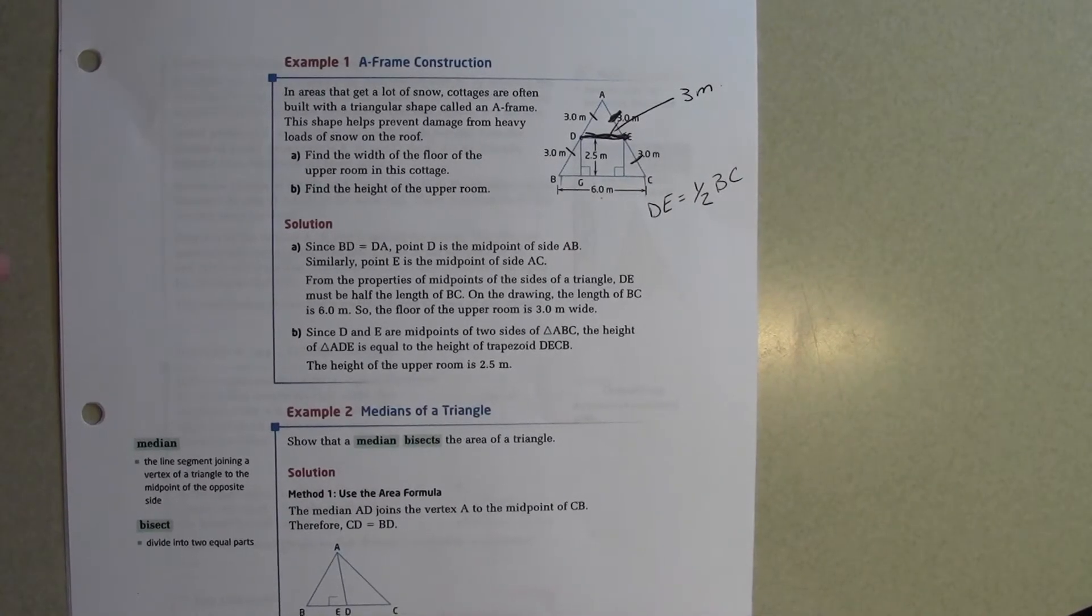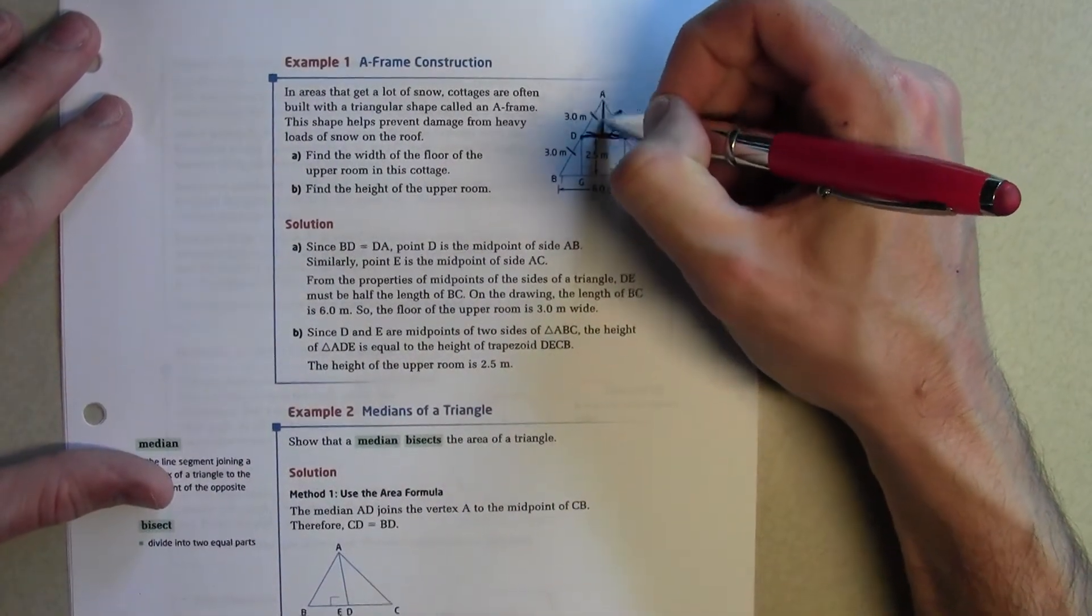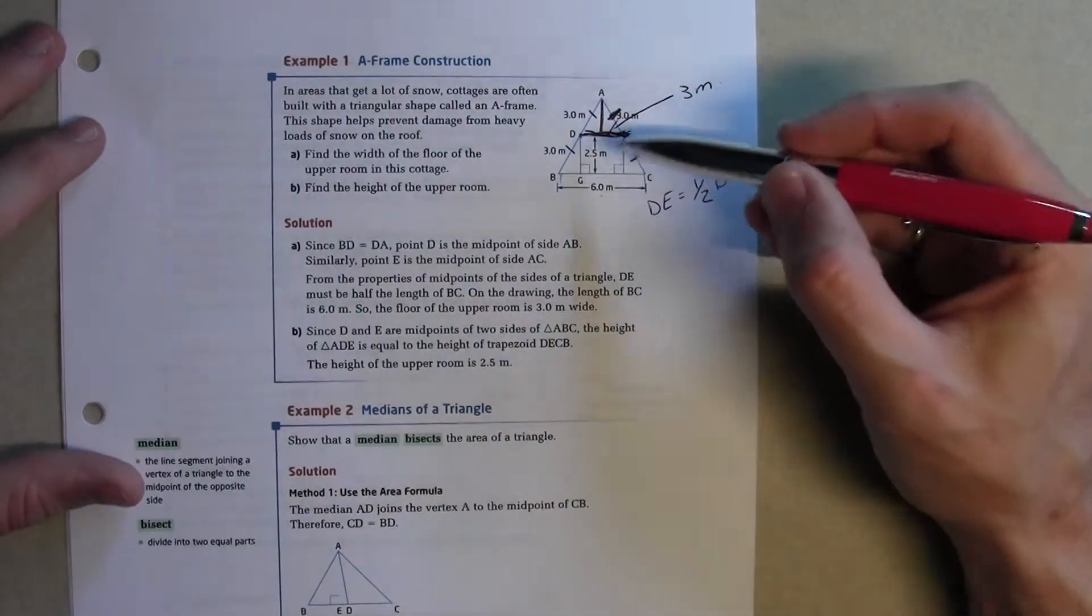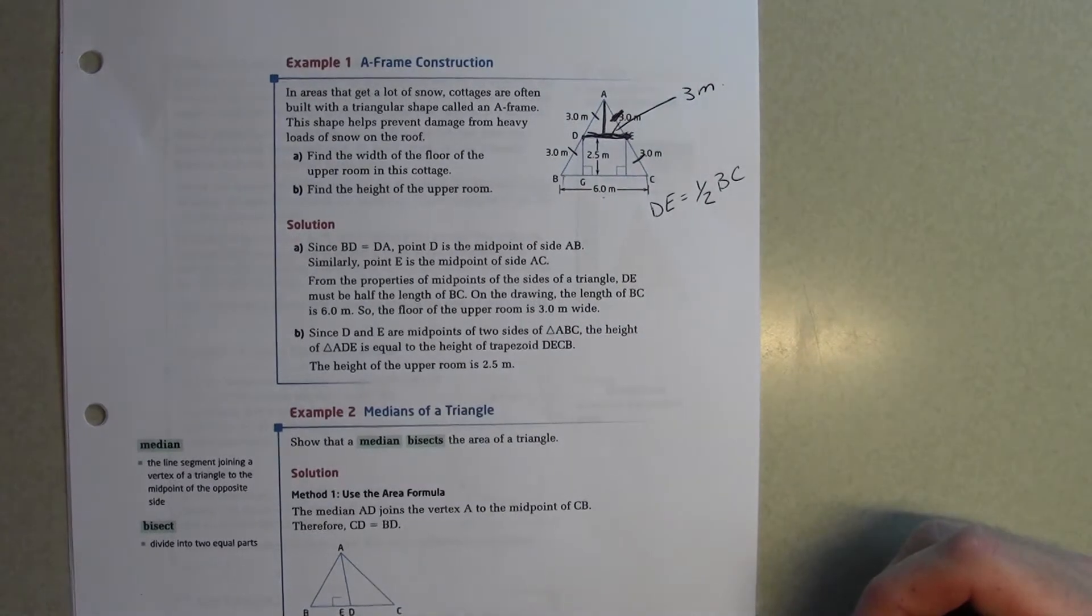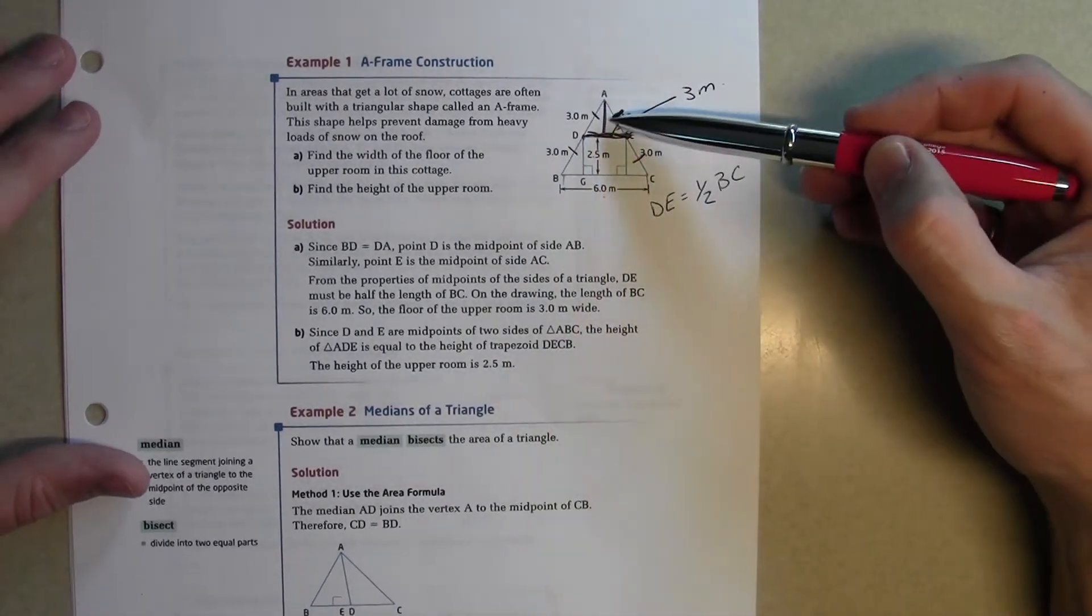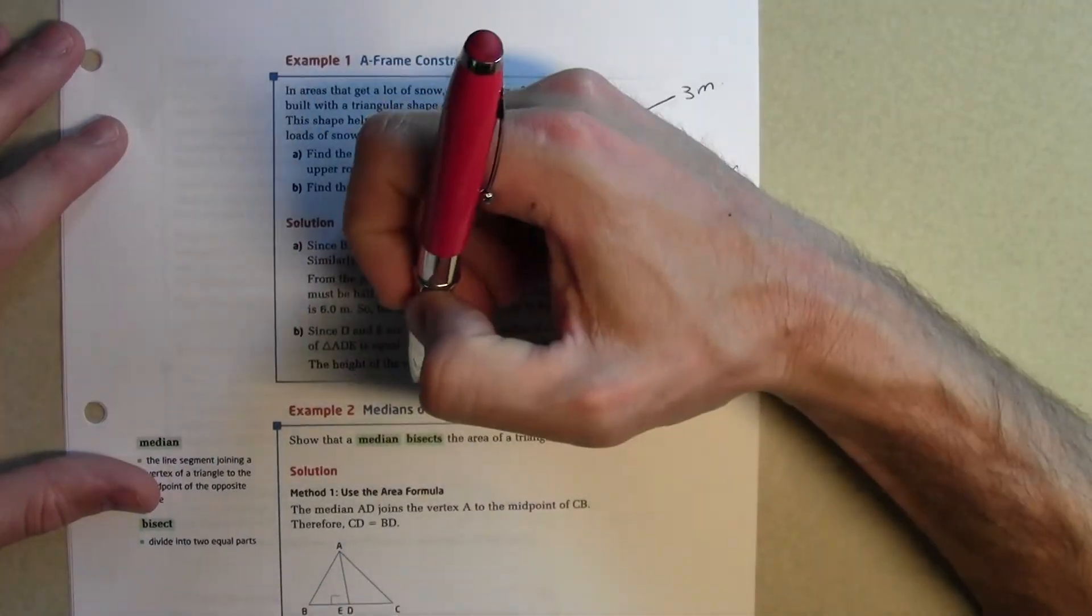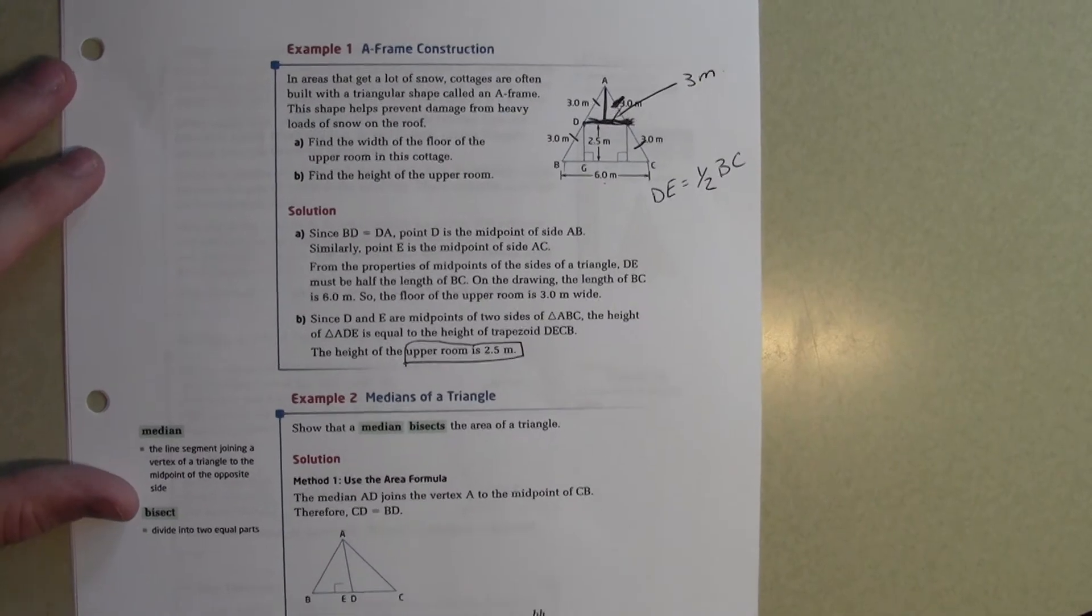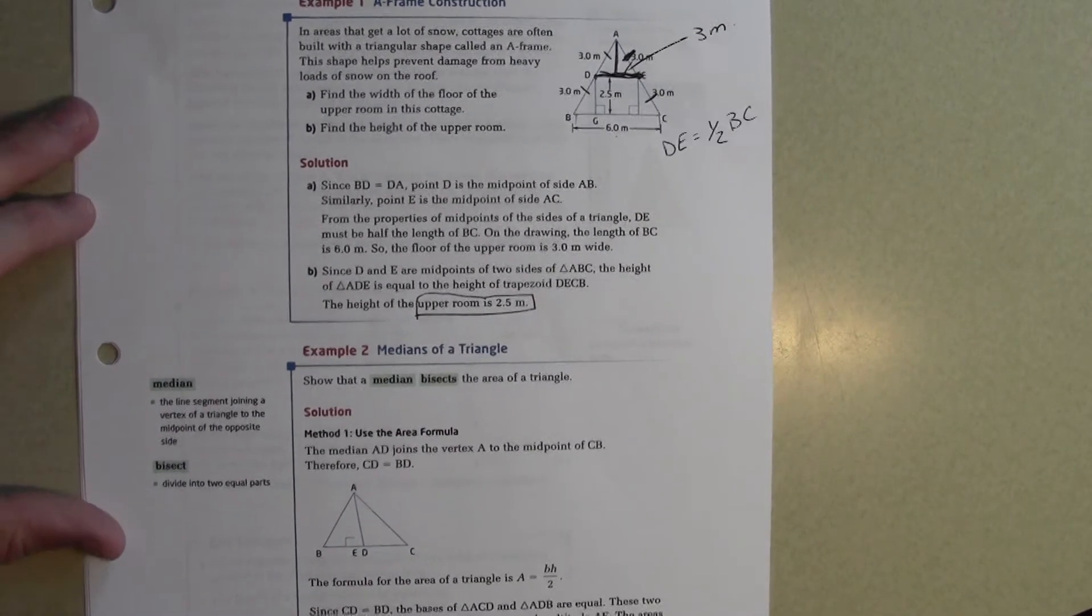Find the height of the upper room. So the height of the upper room would be this height here. We know that that height is equal to the opposing quadrilateral height, which is 2.5. Right? We did that when we did that fold over. So the height of the upper room, then, is 2.5. Any questions?